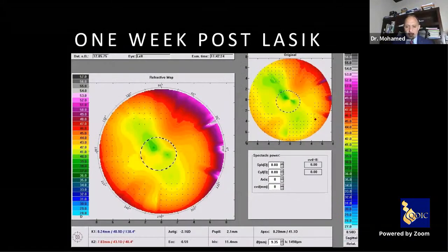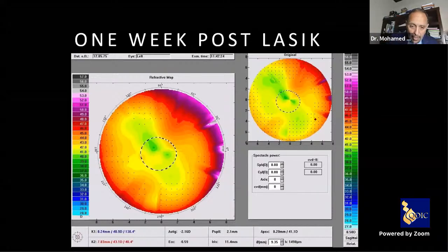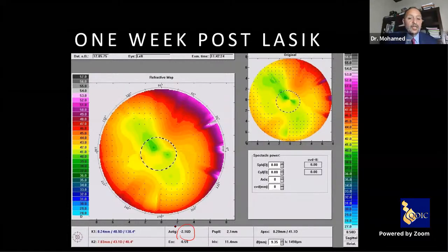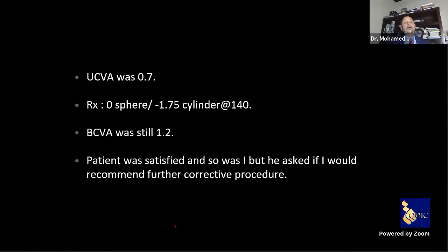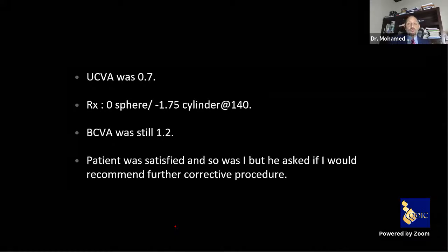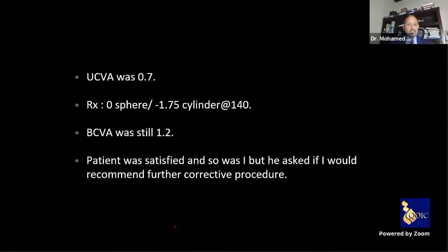One week post-LASIK, the topolyzer showed 2.16 diopters — less than the 2.4 target. Uncorrected visual acuity was 6/9, refraction was -1.75 cylinder, and best corrected visual acuity was 1.2. The patient was satisfied, and so was I.